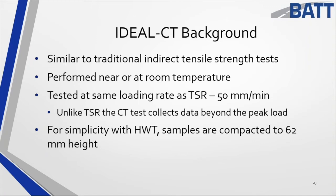Just a quick overview of the Ideal CT background — performing it at room temperature. Samples are compacted to 62 millimeters. Why 62? Because it's rounded from an English unit. The importance of that height is it's also the same height you would use for a half-inch mix, or in metric, a 12.5 mm or 9 mm mixture. It's the same height used in a Hamburg test. So you're making the same height sample — that's why they went with an Ideal CT of 62 mm.